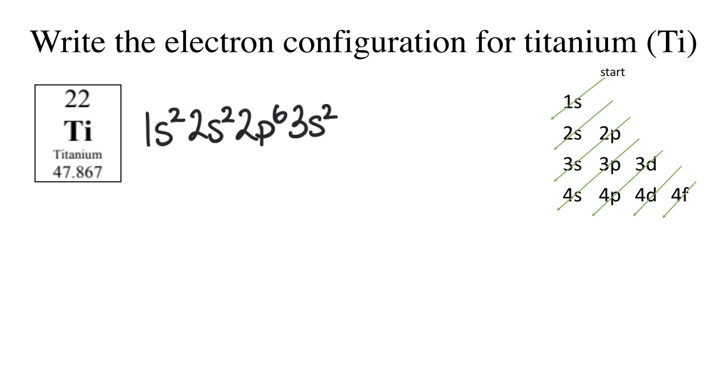The 3S, that can hold 2 electrons. Then the 3P, that's another 6 electrons. The 4S, there's another 2 electrons. Then the 3D, which could hold 10 electrons, but I'm just going to write a 2, because when I add up all the superscripts, it comes out to 22, matching the number of electrons for titanium.